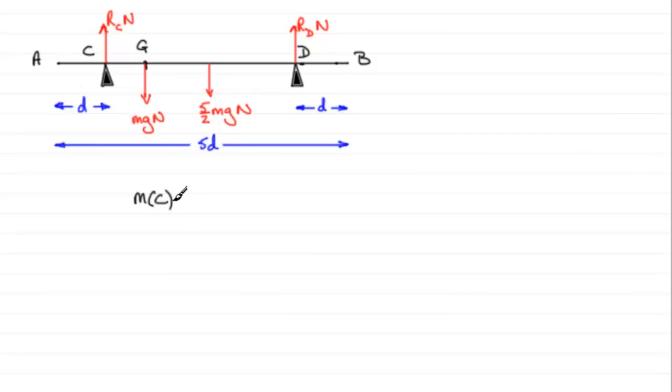So that's what we're going to do. We're going to take moments about the point C in order to get RD. And we need to set up a positive sense. And again, as always in moments questions, it doesn't matter which way you do, but as long as you stick to it throughout the question, I'm going to take anti-clockwise as positive.